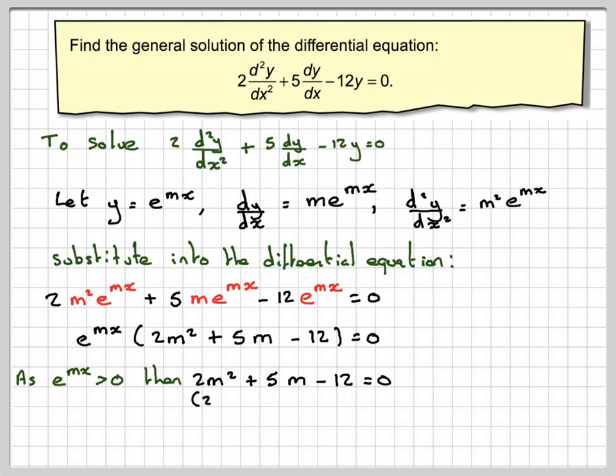So if we solve that, so factorise it, we've got 2m and m, try 3 and 4, minus 3 plus 4, that's going to give 8 minus 3, which is plus 5, and we've got minus 12 at the end.